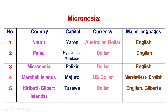Next, Micronesia. Nauru: capital Yaren, currency Australian dollar, major language English. Palau: capital Ngerulmud, currency dollar, major language English. Micronesia: capital Palikir, currency dollar, major language English. Marshall Islands: capital Majuro, currency US dollar, major languages Marshallese and English. Kiribati, also known as Gilbert Islands: capital Tarawa, currency dollar, major language English.